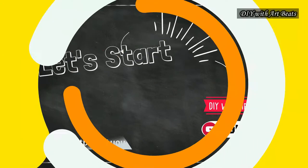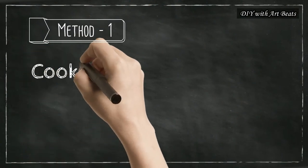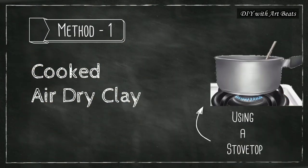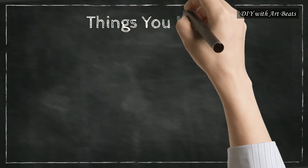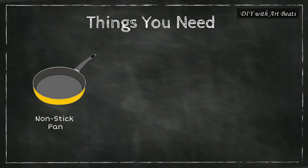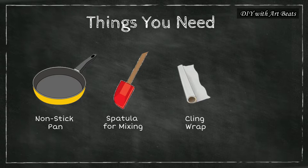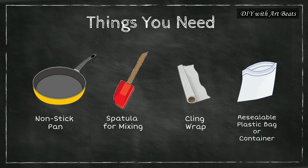Let's start now. So our first method is cooked air dry clay using a gas stove. Things you need for this is a non-stick pan, a wooden or silicon spatula for mixing, cling wrap and a resealable plastic bag or any airtight container.